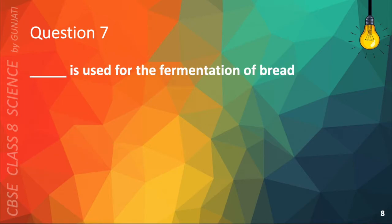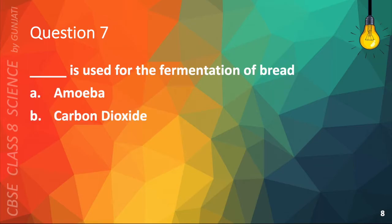Question 7. Blank is used for the fermentation of bread. A. Amoeba, B. Carbon dioxide, C. Yeast, or D. Fungi.